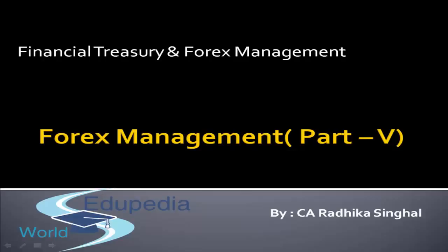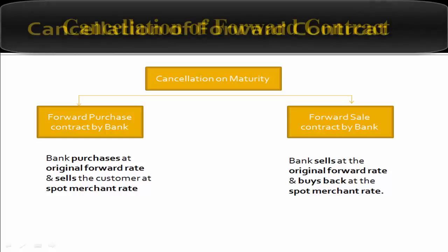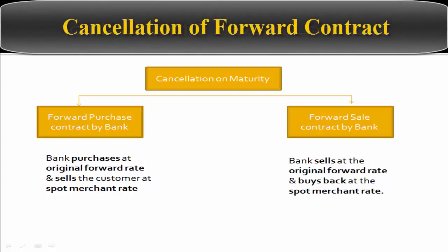The bank does not have only one customer for such transactions. If the bank has a purchase-sale contract, it has made an arrangement of a purchase contract with some other customer. So if one customer cancels, the bank will be at a losing position because it has another contract also after that specified period. Cancellation could be either on the maturity date or before the maturity date.